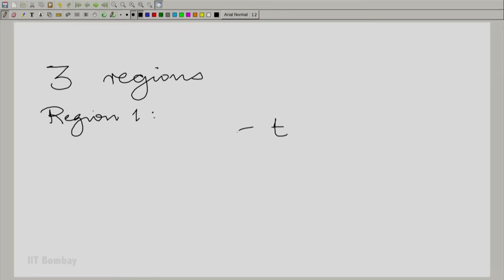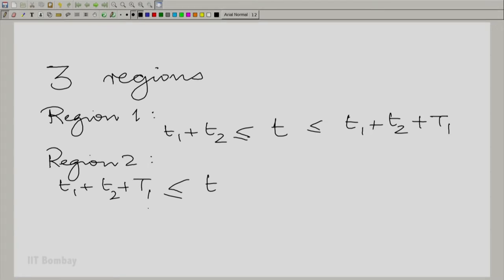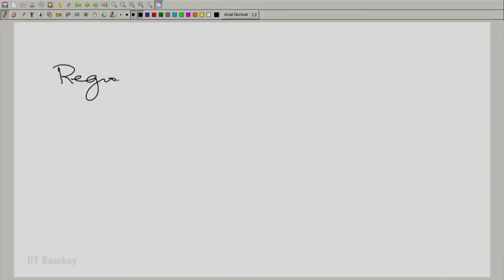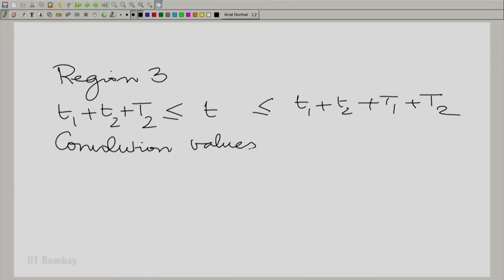The first region was T greater than or equal to T1 plus T2 and less than or equal to T1 plus T2 plus capital T1. Region 2, T goes from T1 plus T2 plus capital T1 to T1 plus T2 plus capital T2. Of course, capital T2 is greater than capital T1, so this is valid. And finally, region 3 was T greater than T1 plus T2 plus capital T2 but less than or equal to T1 plus T2 plus the sum of capital T1 and capital T2.